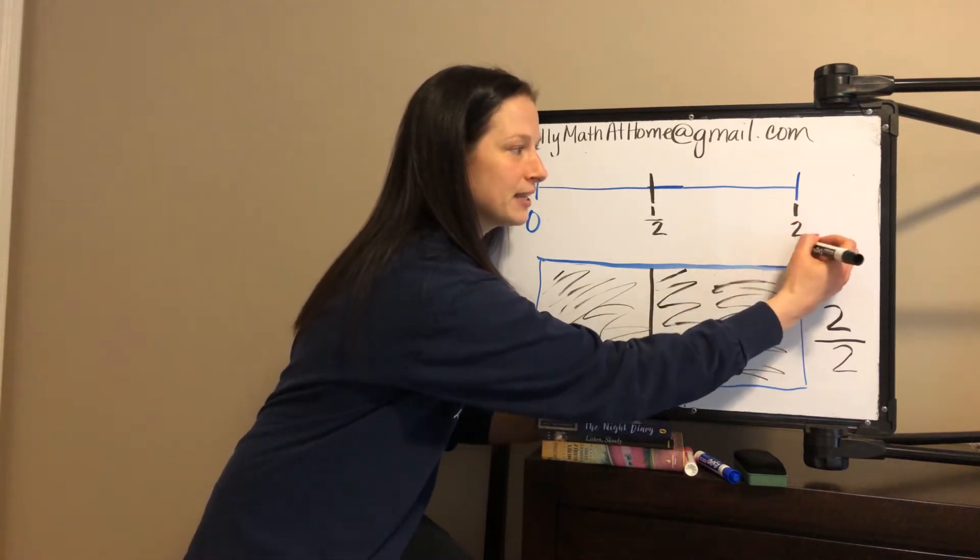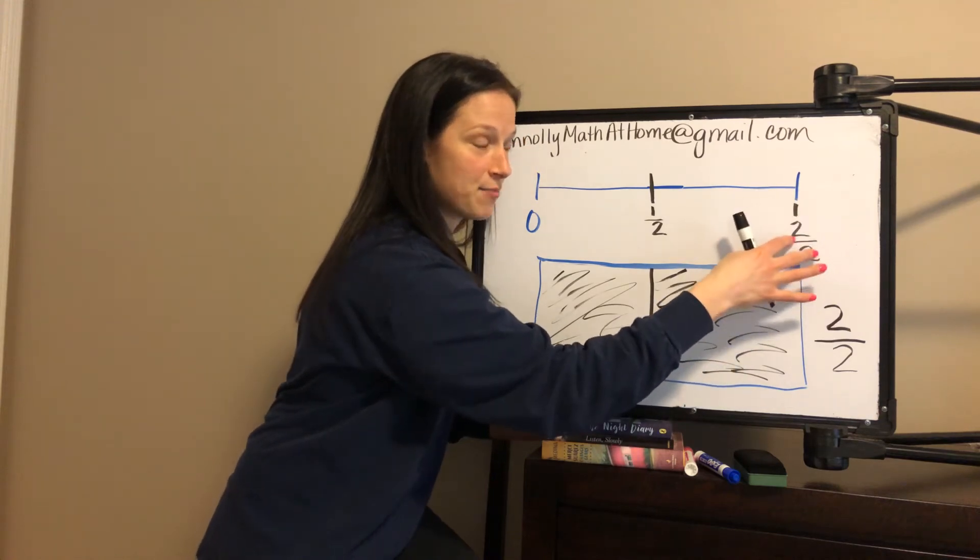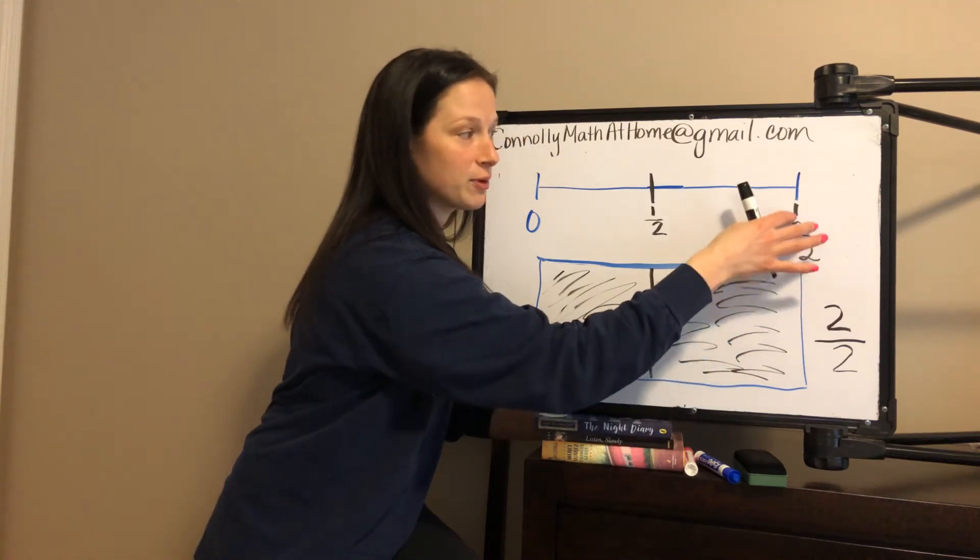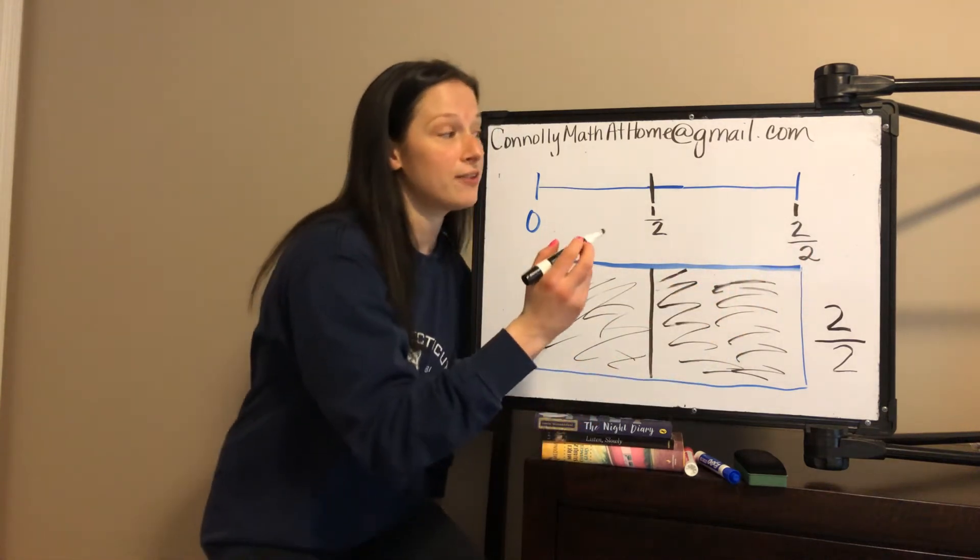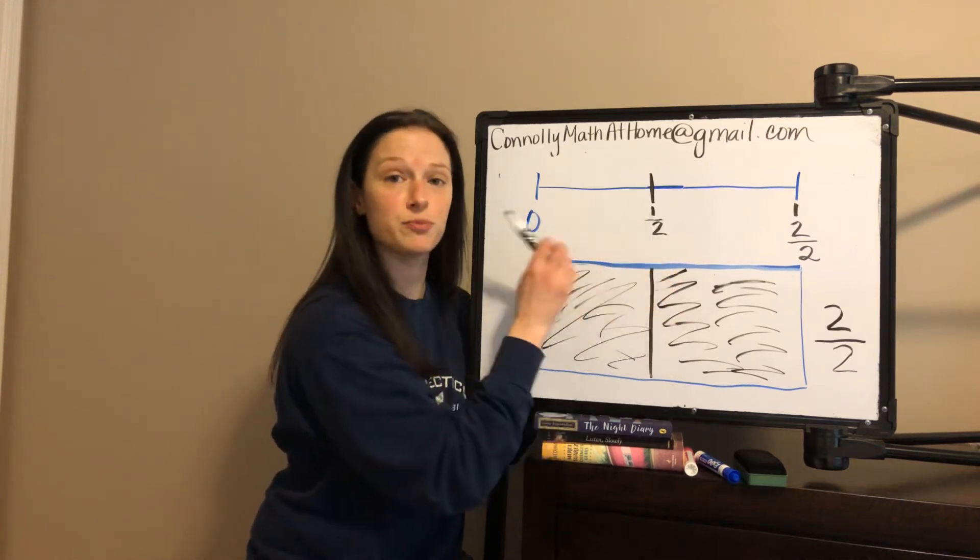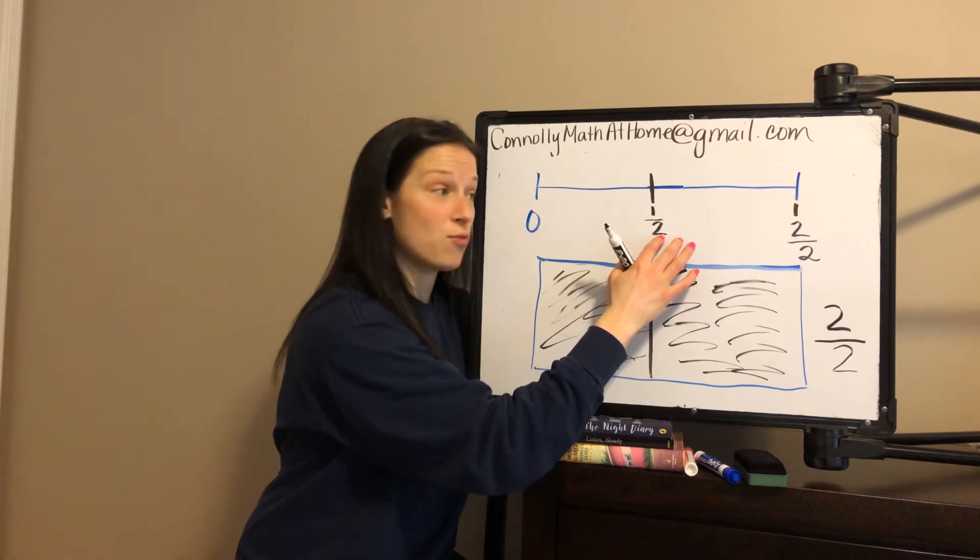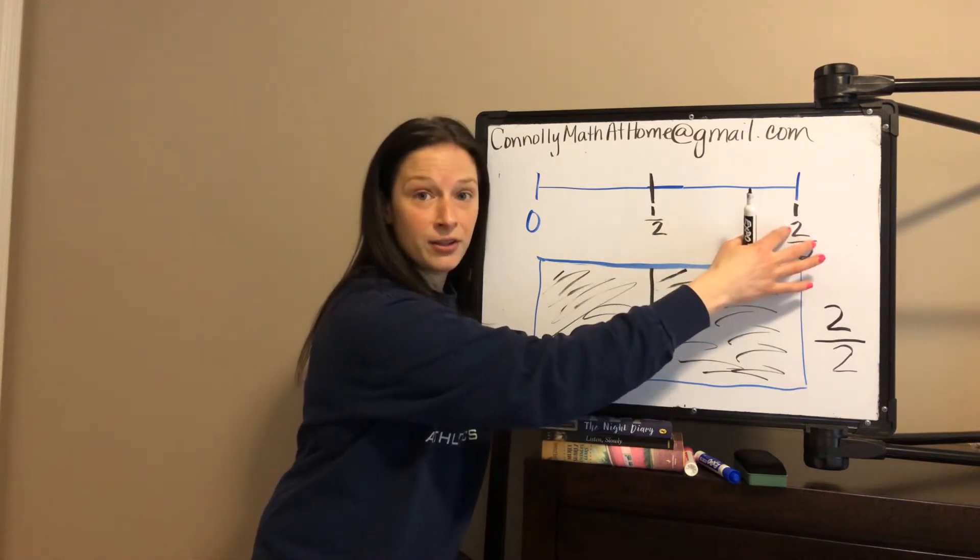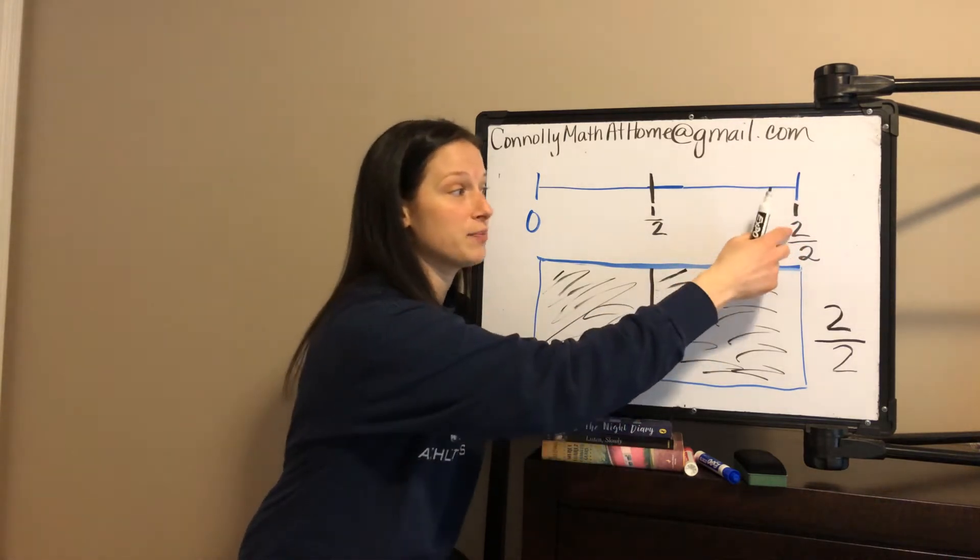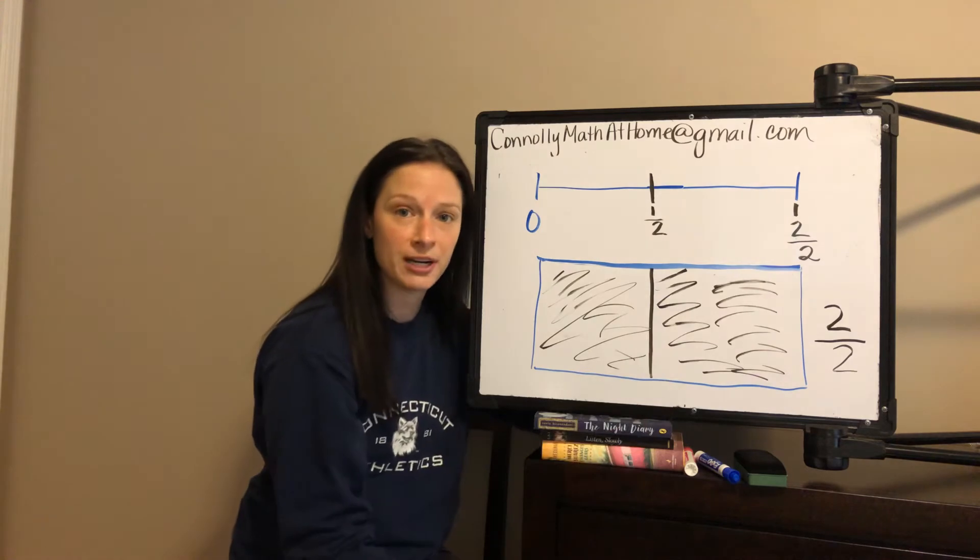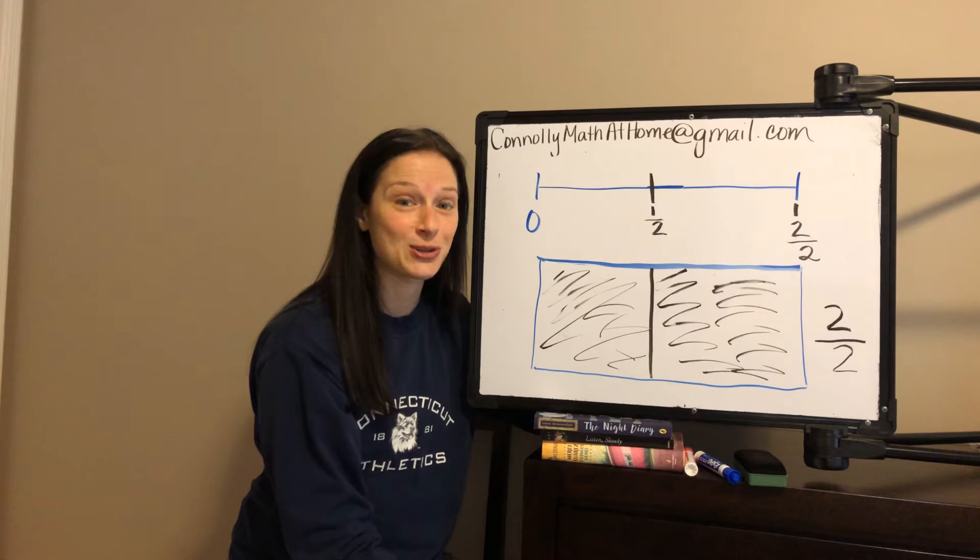When we're labeling our number line, one whole is the same as two halves. So we might write two halves right underneath the one to show that it's the same amount. If I walked one half of the mile and then I walked the other half of the mile, that would have been two halves. One whole is the same as two halves. I want you to start thinking about the numerator and the denominator when we get to a whole. What do you notice?